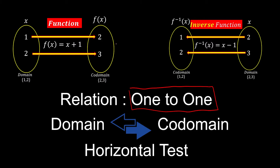This one-to-one requirement ensures that when we reverse the arrows, we still have a one-to-one relation. Also remember that the domain and co-domain switch places.